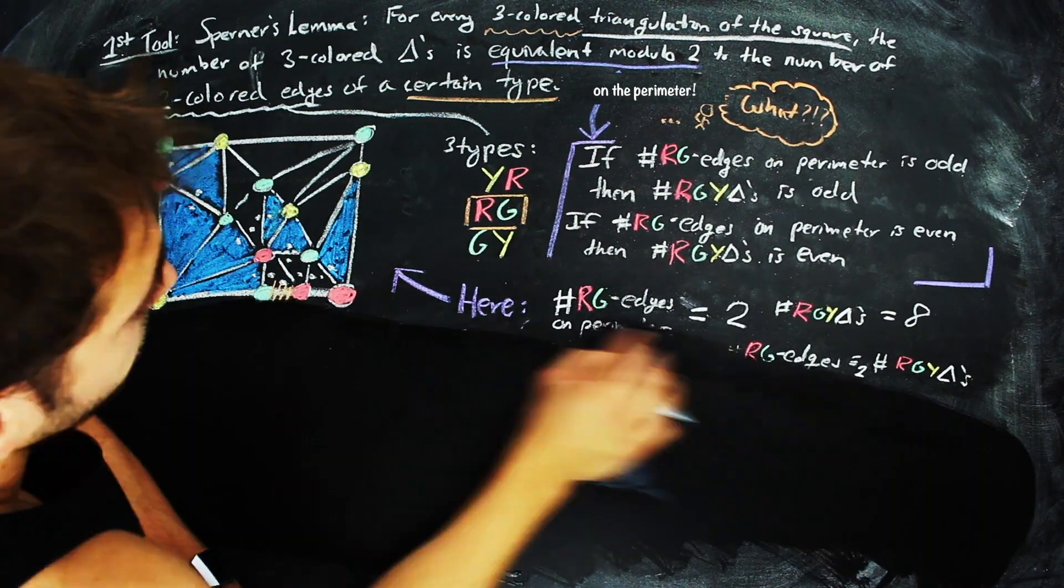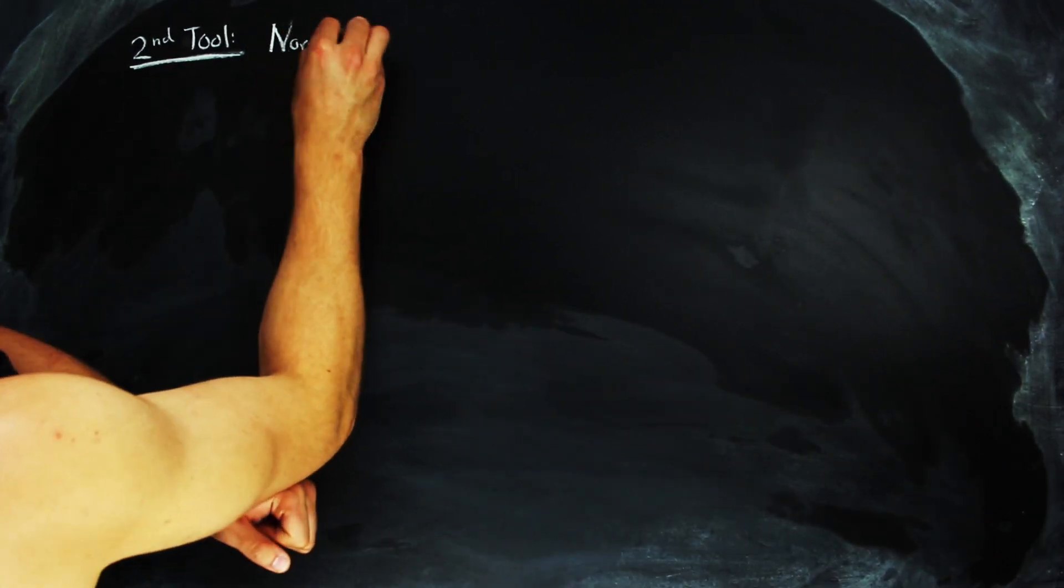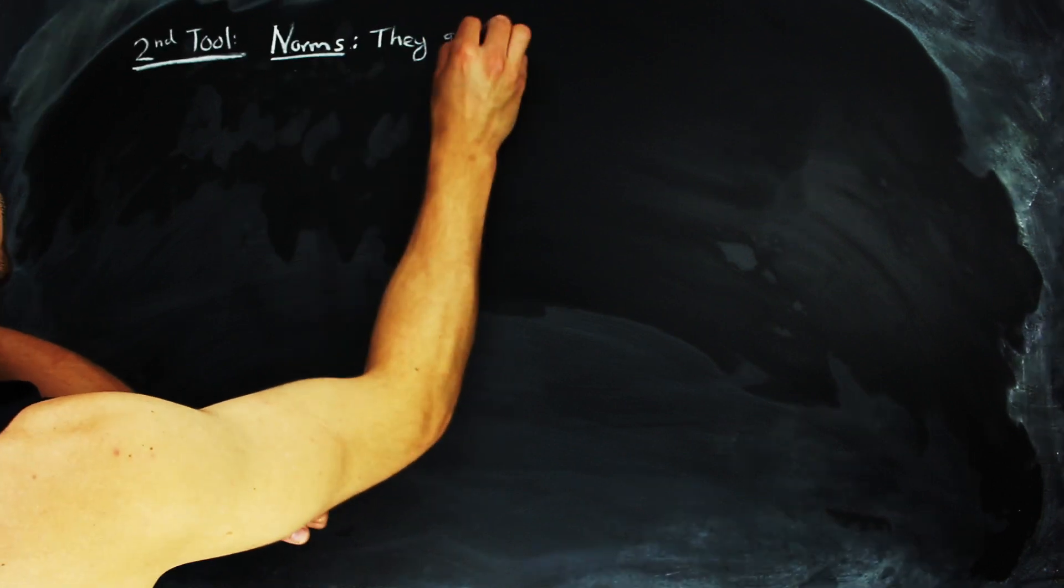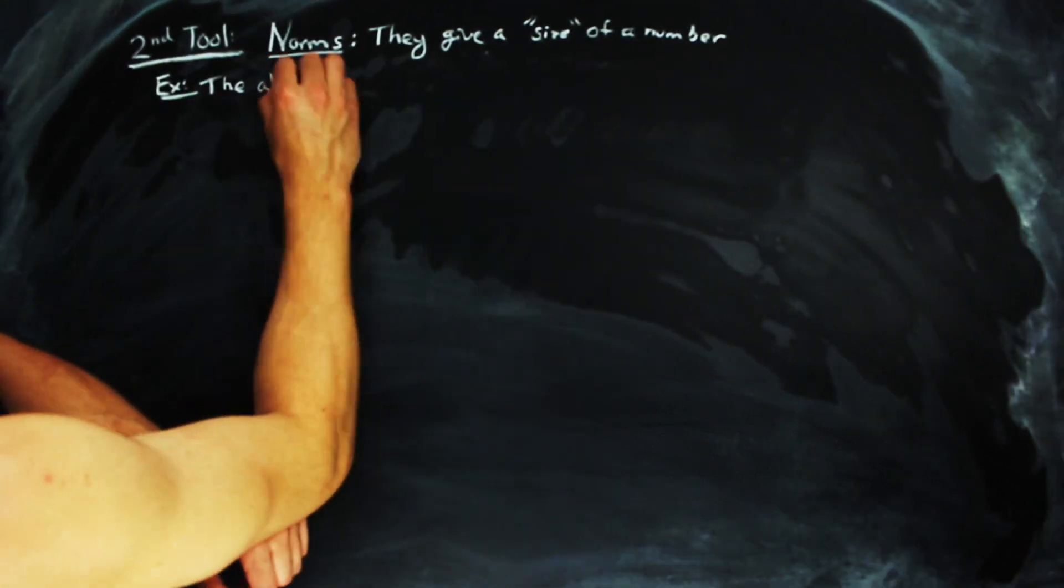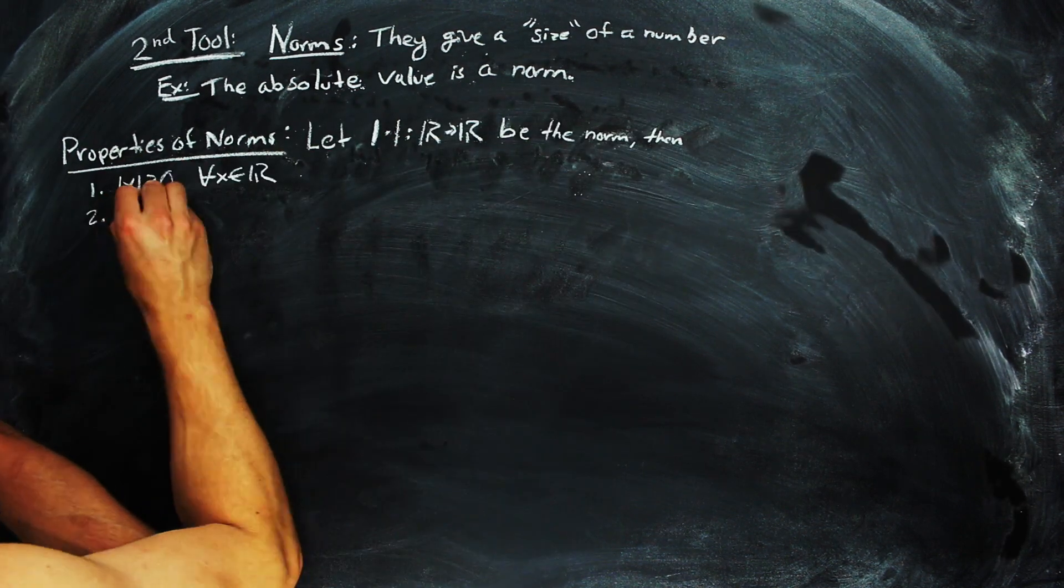So, that's great, but we're going to need another tool. Specifically, we need a different way of talking about the size of a number. Oftentimes, we use the absolute value to get the size of a number. The absolute value is an example of a norm, which means it is a function that has the following properties.